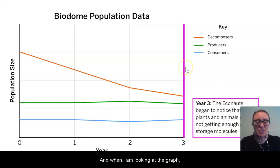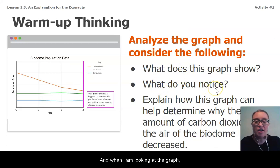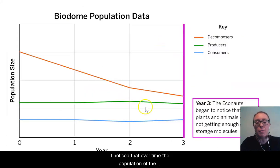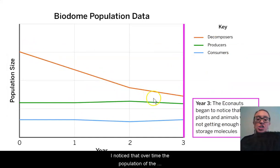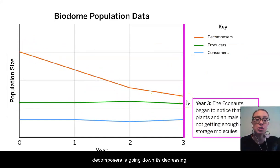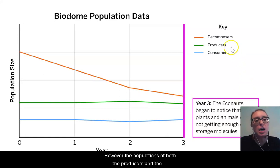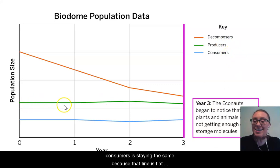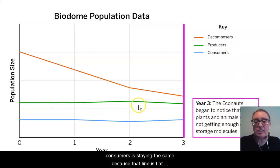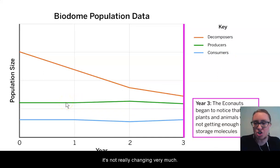And when I am looking at the graph, I notice that over time the population of the decomposers is going down — it's decreasing. However, the populations of both the producers and the consumers is staying the same because that line is flat; it's not really changing very much.